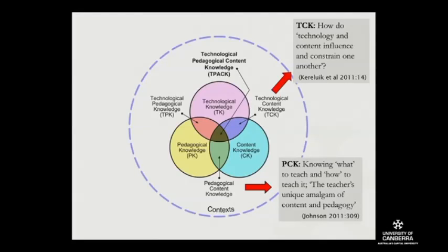Technology Content Knowledge is about how the technology affects and constrains the content. For an art teacher, there are millions of artworks available online now, which might change the type of content you can teach. In the past, you were restricted to a couple of posters in the classroom or books in the library. Now you've got almost a whole world of art available online. So the content you can teach around art history or art methods changes — that's how technology may influence content.